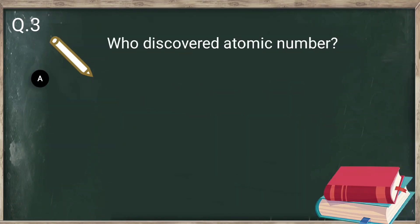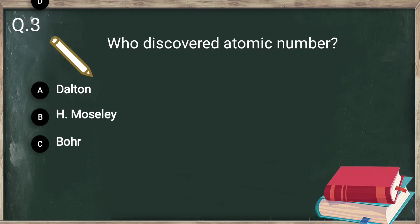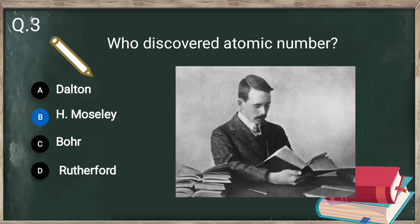Question number 3: who discovered atomic number? — Dalton, H. Moseley, Bohr, or Rutherford? Henry Moseley discovered atomic number. The atomic number is a fundamental property of an element — it is the number of protons present in the nucleus of an atom.